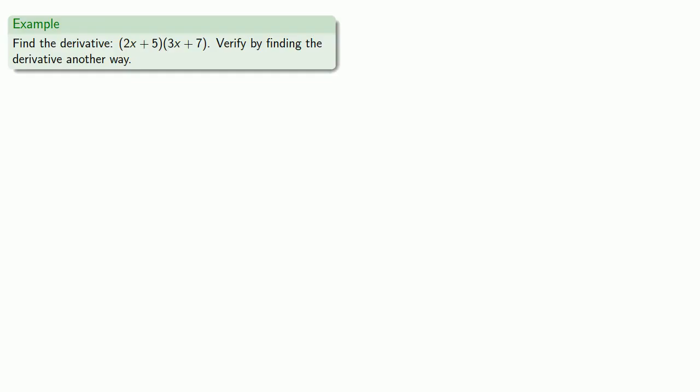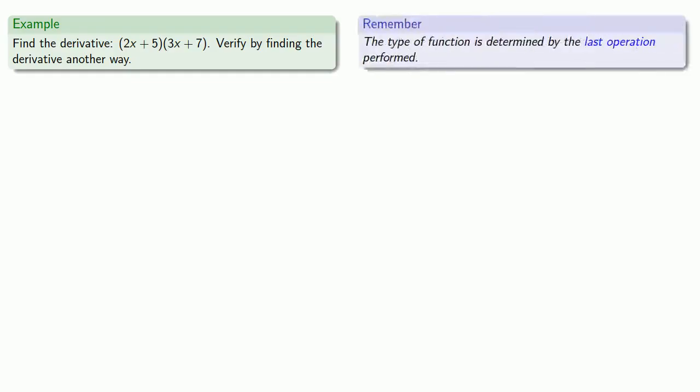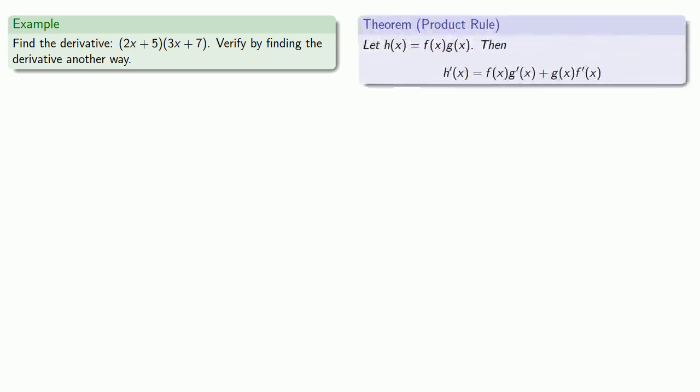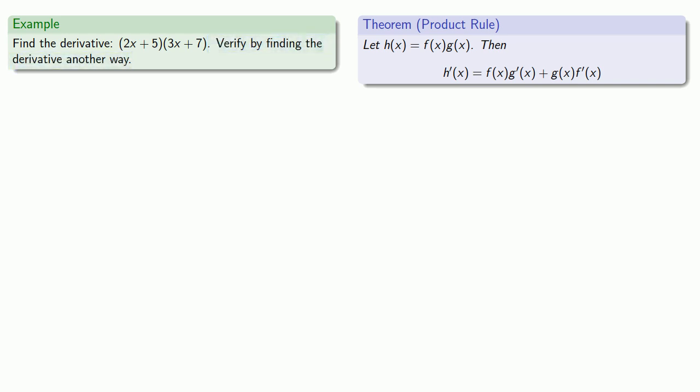Suppose we want to find the derivative of (2x + 5) times (3x + 7). The last thing that we do determines the type of function, and in this case this is a product, and we have a way of finding the derivative of a product. And because we found this on the internet, it must be true. But we might be somewhat skeptical and want to verify that the derivative is actually correct, so let's find the derivative in two different ways.